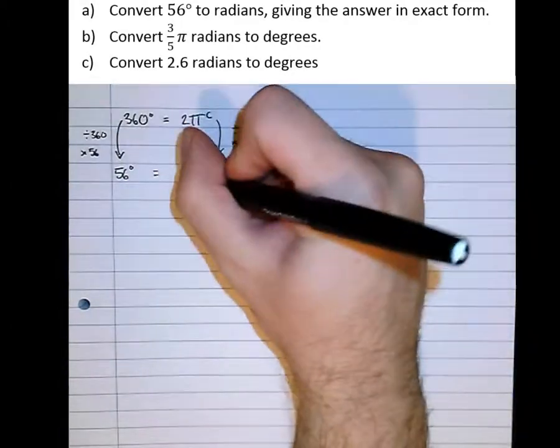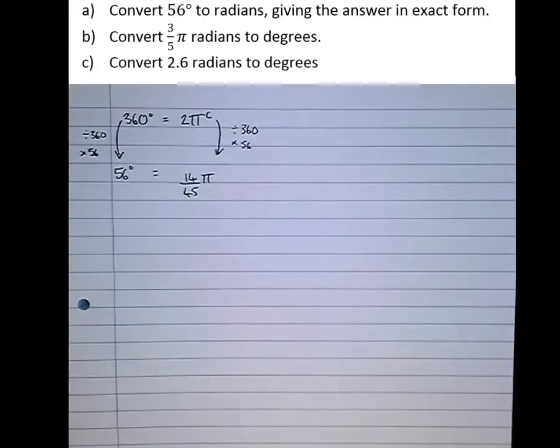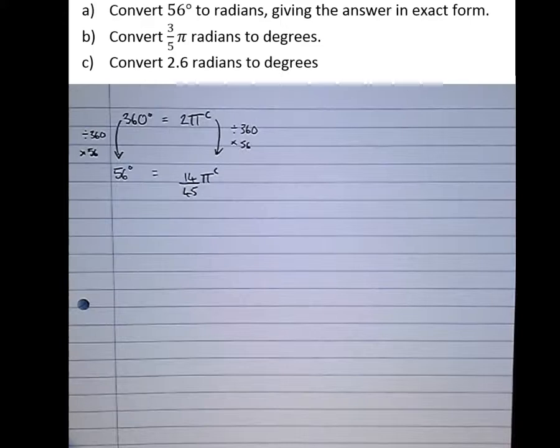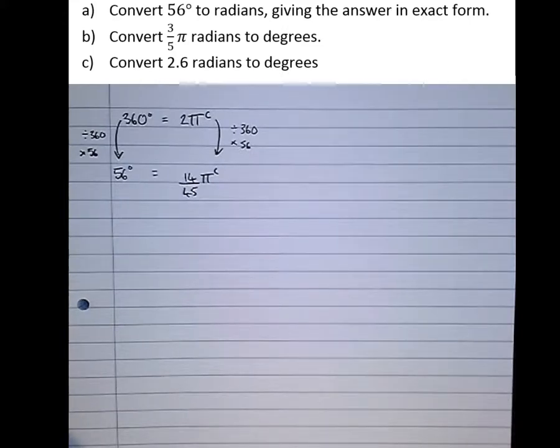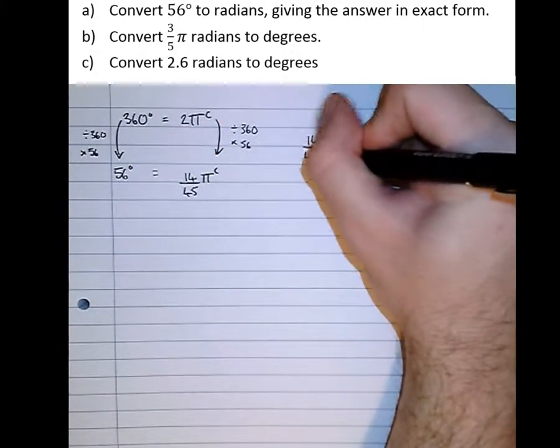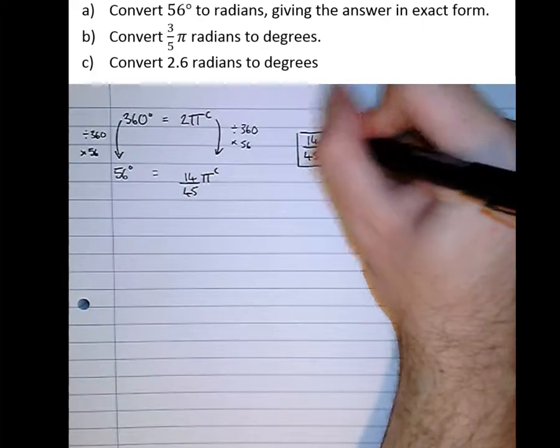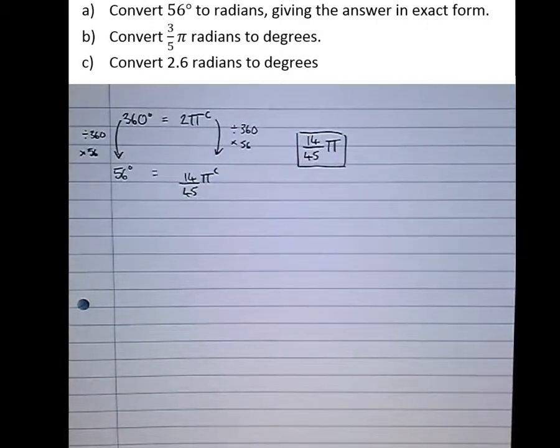Let's write that down, and it wouldn't be appropriate to round this or convert it to a decimal form because the question asks for the answer in exact form. So the answer is 14/45 π. Don't convert it to a decimal once the answer is in exact form.